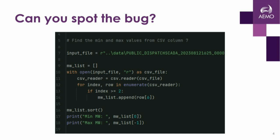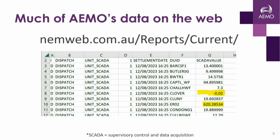First of all, can you spot the bug in this code? Probably not a fair question because you haven't seen the context. But you can see that it opens a text file, iterates over it, pulls out column number six, adds the value to a list, sorts it, and prints it out. What's the whole point of that? Well, here's the underlying data.